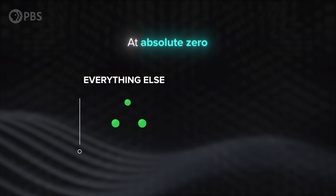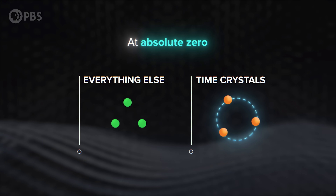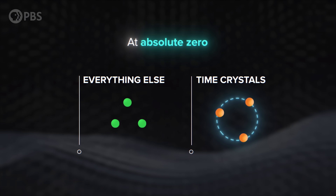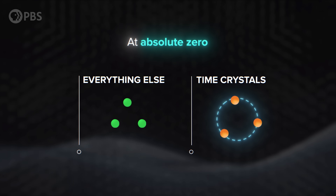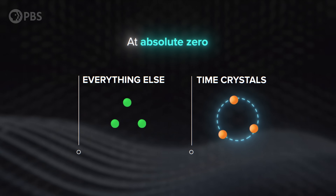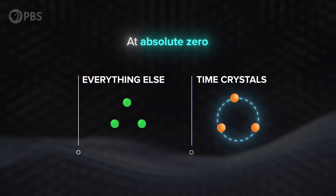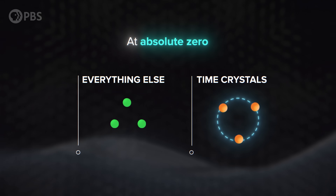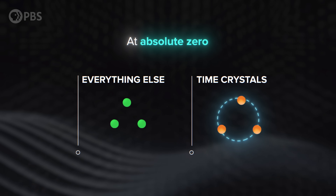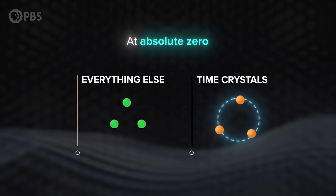Time crystals are the latest and perhaps weirdest quantum state of matter. These are configurations of entangled particles that oscillate between states even when they have no energy. In regular thermodynamics, the lowest energy corresponds to absolute zero temperature, which means zero motion of the particles. But the lowest energy state of a time crystal involves real motion, which makes them thermodynamically different from other states of matter — so they qualify as a state of matter of their own.